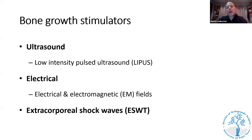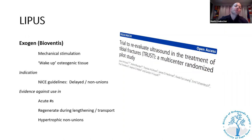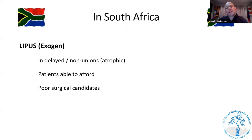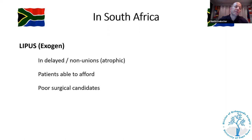Bone growth stimulators include low-intensity pulsed ultrasound (LIPUS/Exogen), electrical stimulation, and extracorporeal shockwave therapy. Unfortunately, well-designed multi-center randomized studies show no benefit for LIPUS in acute fractures, during regenerate lengthening, or in hypertrophic non-unions. Use should be limited to delayed atrophic non-unions in patients who can afford it. Importantly, they do no harm — so if the patient can afford it, it buys time, and time is important in fracture healing.